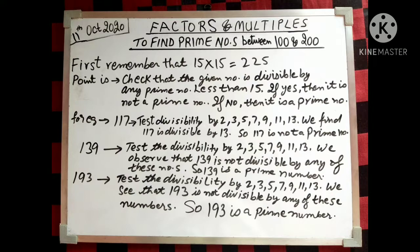In the same way, take the example of 139. If we test divisibility by 2, 3, 5, 7, 9, 11, and 13, we observe that 139 is not divisible by any of these numbers, so 139 is a prime number. Next, take 193. If you test divisibility by 2, 3, 5, 7, 9, 11, and 13, we see that 193 is not divisible by any of these numbers, therefore 193 is also a prime number.